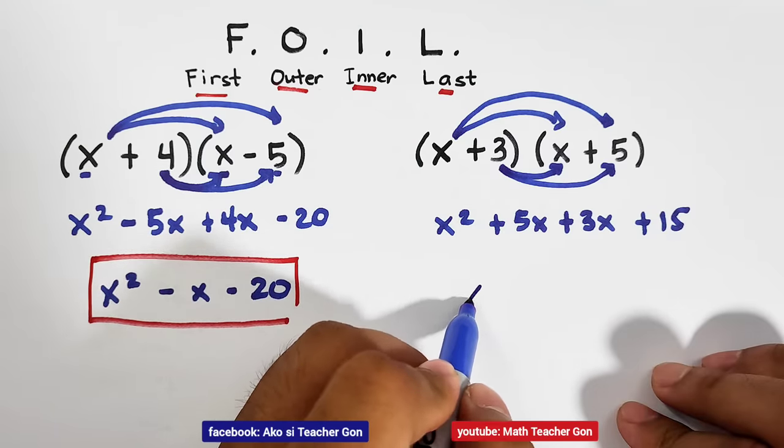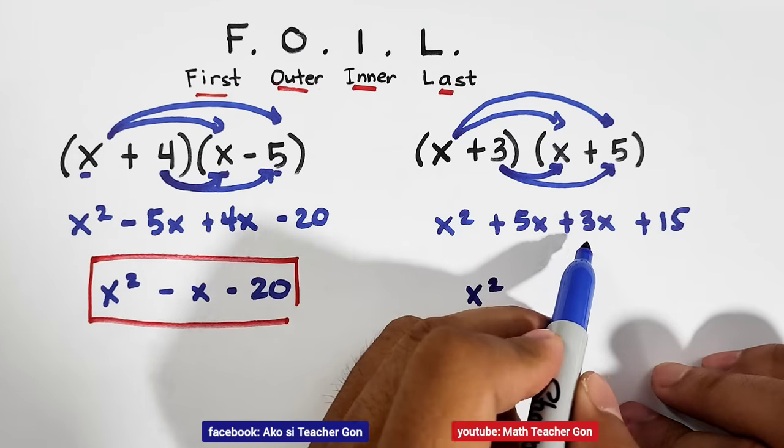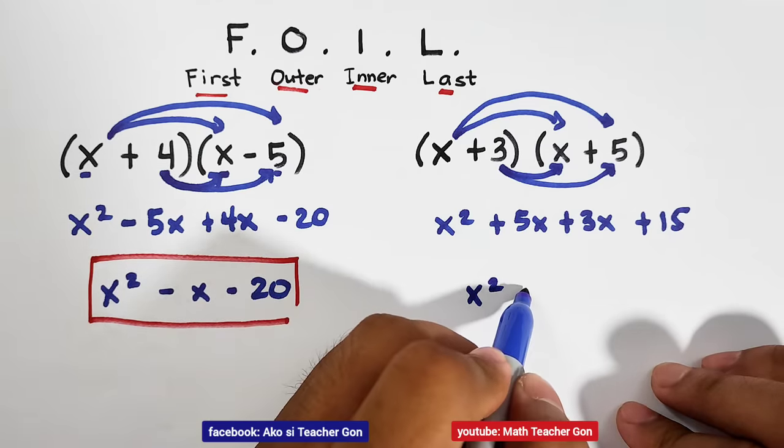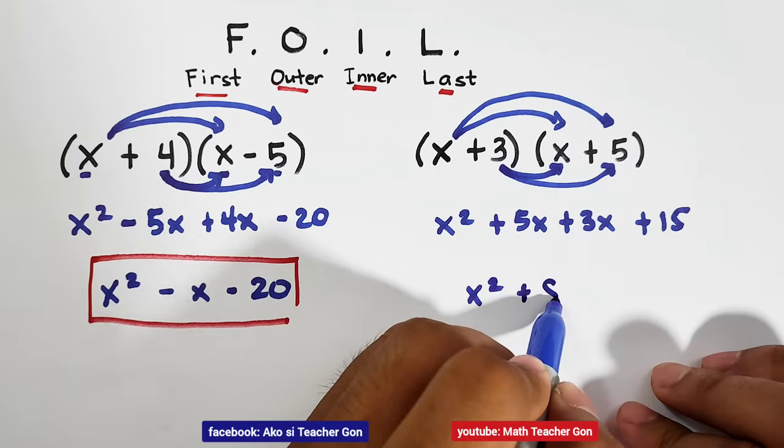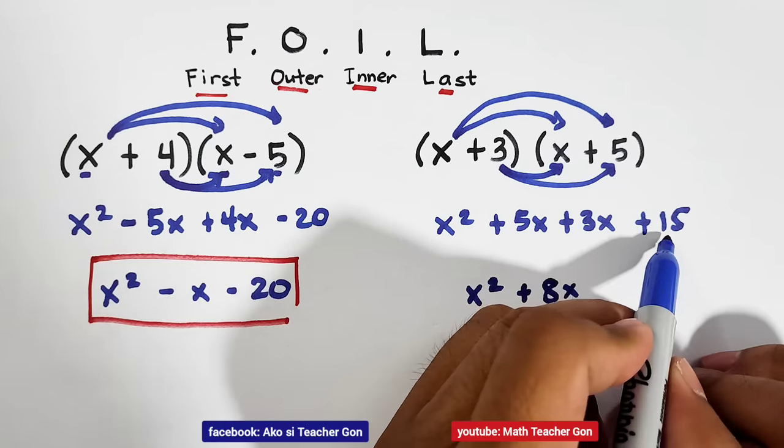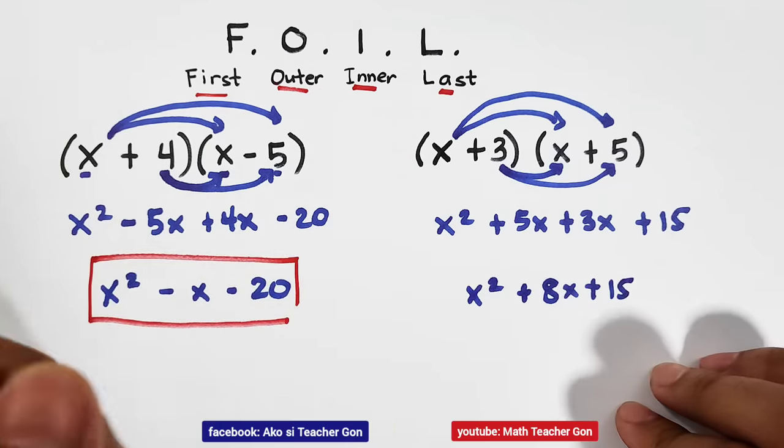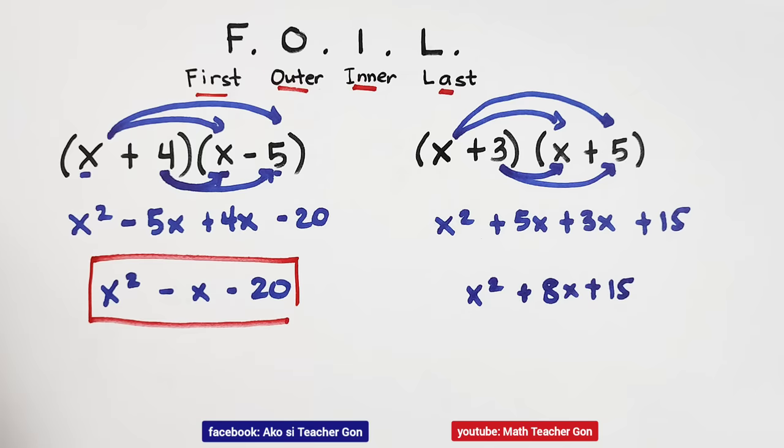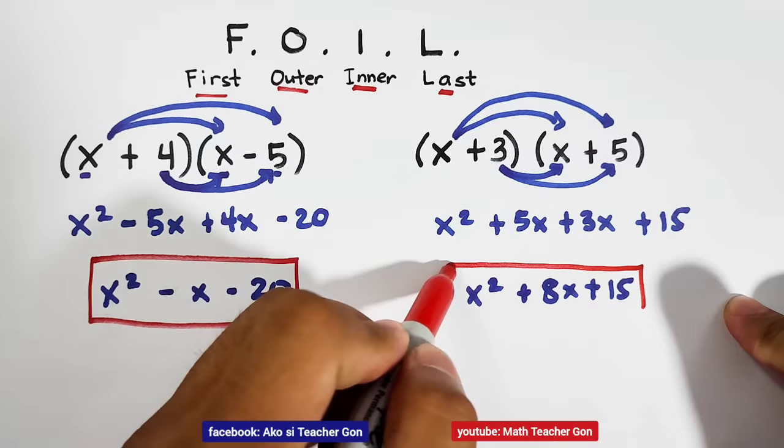Copy x squared. Combine 5x and 3x because they are like terms. That is plus 8x. Then plus 15. And this is now the product of the given binomials.